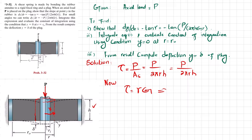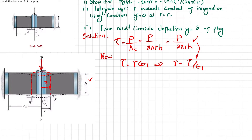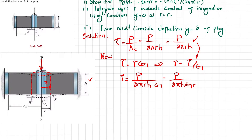Shear stress equals shear strain times modulus of rigidity. From here you can get the shear strain, which equals shear stress divided by G (modulus of rigidity). Since shear stress is P/(2πrh), substituting gives the shear strain equal to P divided by 2πrh times G, which simplifies to P / (2πhGr). This is the shear strain.